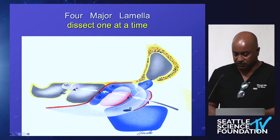Next we look for the ethmoid bulla. After taking down the uncinate bone, we identify the ethmoid bulla behind it — this large structure we can punch into and remove by pieces. But what I do is reach behind it with a curette and pull the entire ethmoid bulla forward, the same technique I use for the uncinate. I don't shave the ethmoid bulla — I reach behind it between the basal lamella of the middle turbinate and the ethmoid bulla, place a curette, navigation probe, or anything behind there, and just rotate and pull it down.